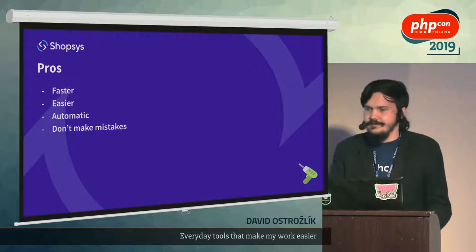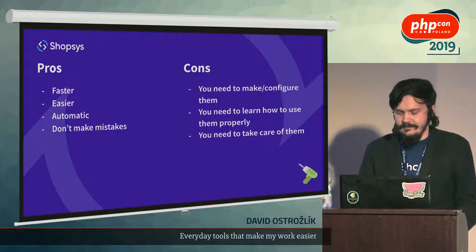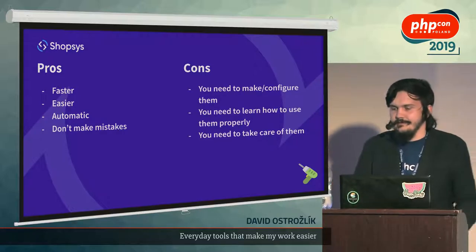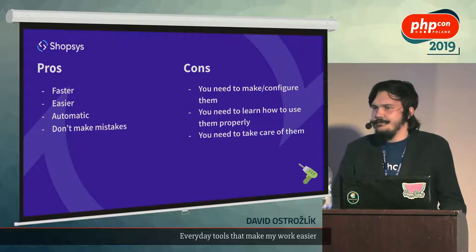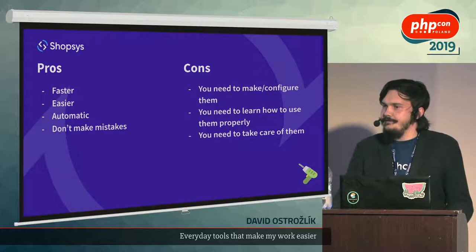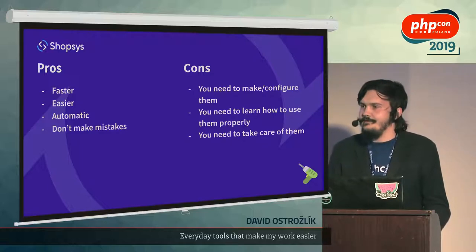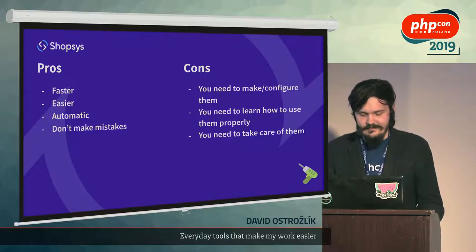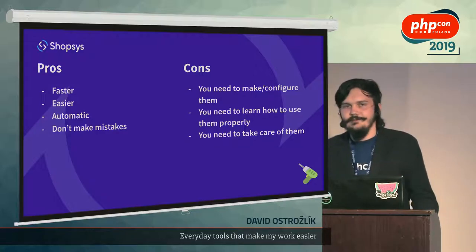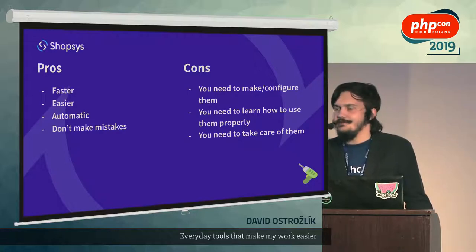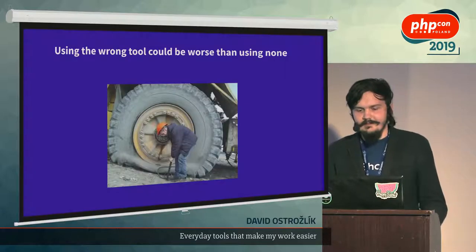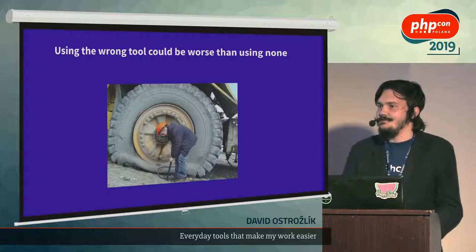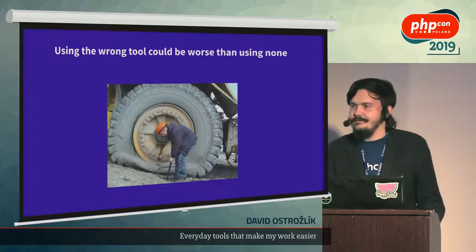But these are pretty good things to have, but what are the downsides of tools? First of all, you need to find them, you need to make them, you need to spend some time configuring them, and for some complicated tools it could be a pretty long time. After you have them, you need to learn how to use them properly, because what use does a tool have if you don't know how to use it? And the third thing is that you still need to take care of them — make sure they are in perfect shape and usable. But most importantly, if you're using the wrong tool, it could be really just worse than using none.